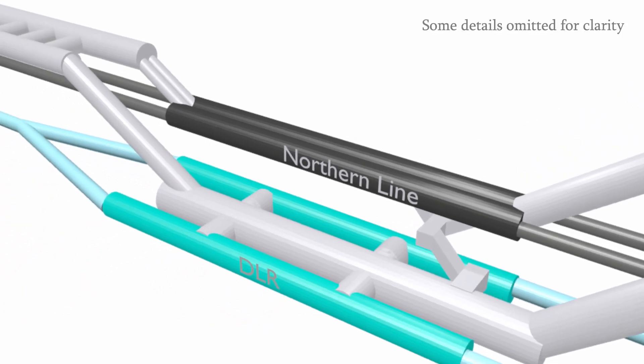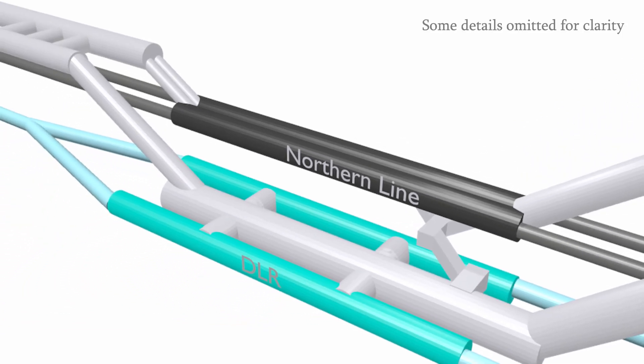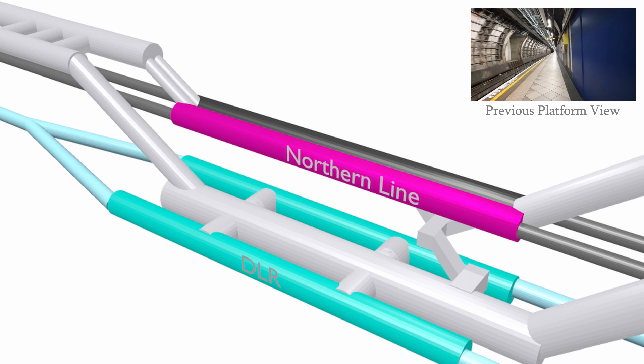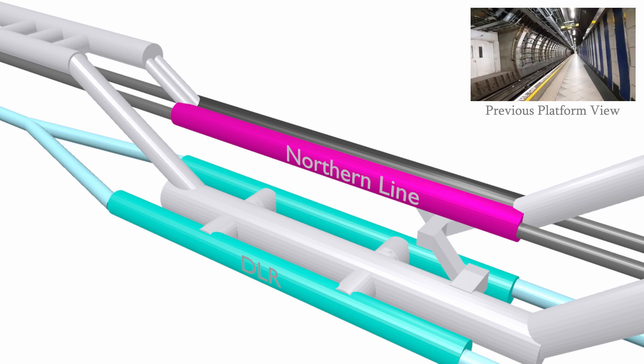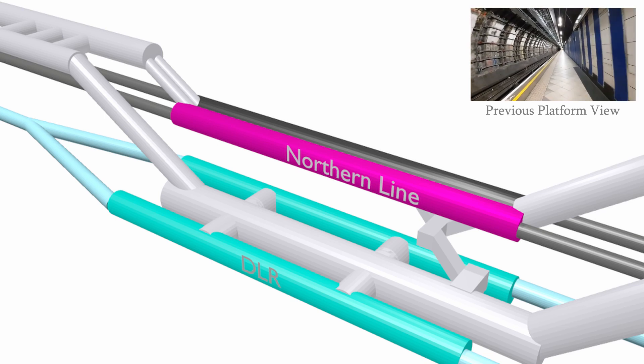The model at the moment is showing what the station looks like at the beginning of 2022. This is where I was walking along the platform, and you can see the issue they've got is that the two Northern Line platforms are back to back and there is very little space for circulating passengers.